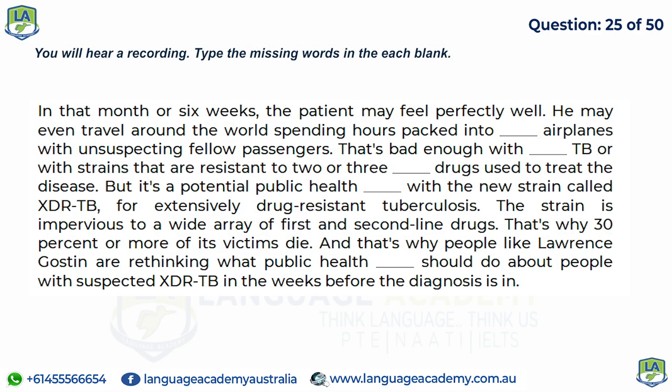In that month or six weeks, the patient may feel perfectly well. They may even travel around the world, spending hours packed into crowded airplanes with unsuspecting fellow passengers. That's bad enough with regular TB or strains resistant to two or three mainline drugs — but it's a potential public health catastrophe with the new strain called XDR-TB, for extensively drug-resistant tuberculosis. The strain is impervious to a wide array of first and second-line drugs, which is why 30 percent or more of its victims die, and why authorities are rethinking what to do about people with suspected XDR-TB in the weeks before diagnosis.